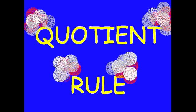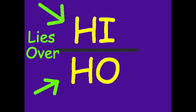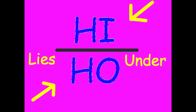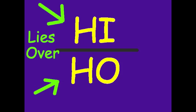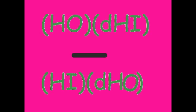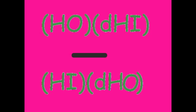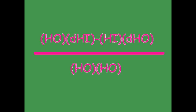Use the quotient rule, so we can find the derivative. The function high lies over a function. The function low lies under high. Oh, what could the answer be? Ho dee hi minus hi dee ho. All of this over ho ho ho.